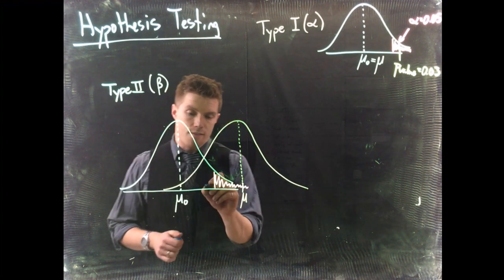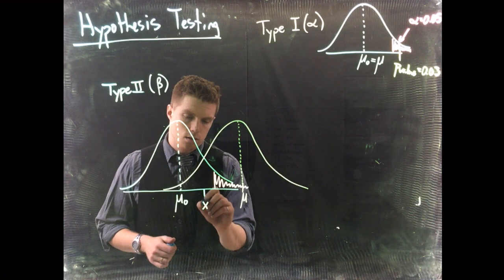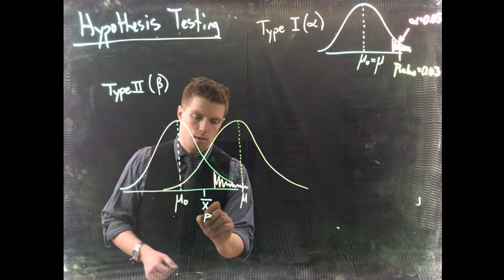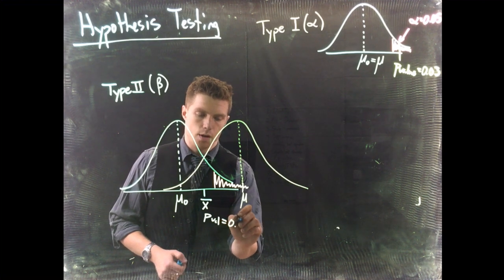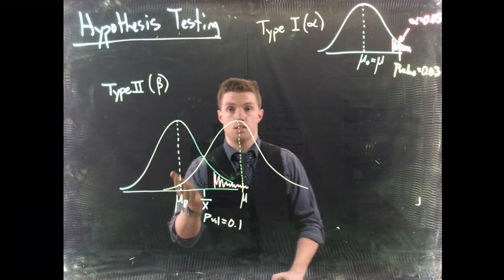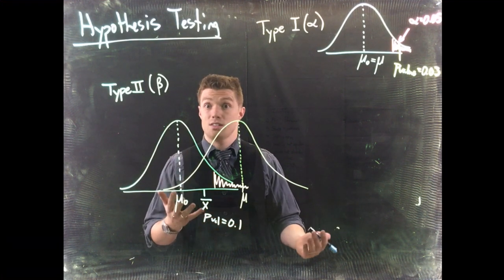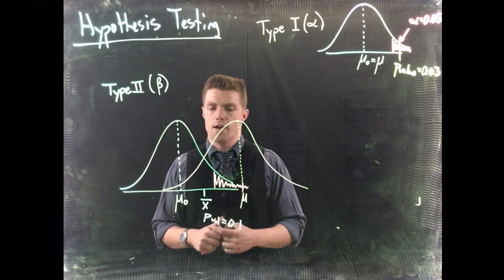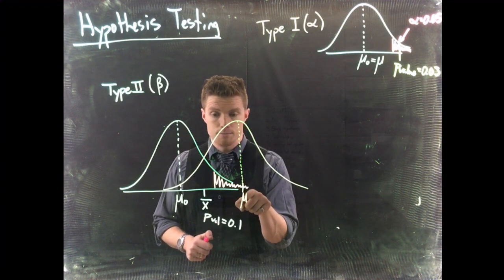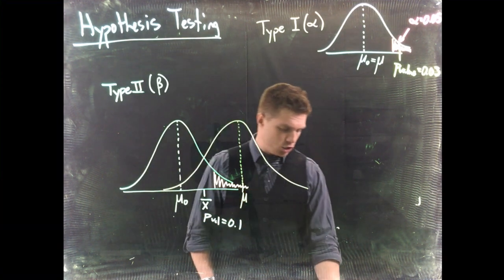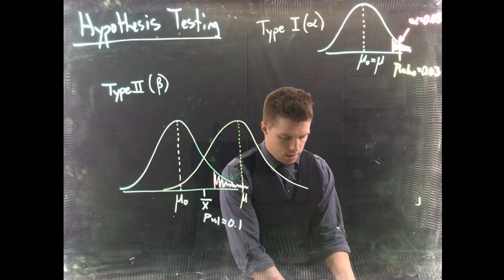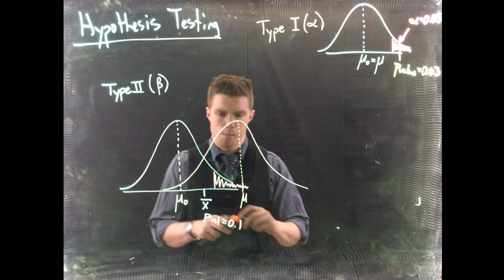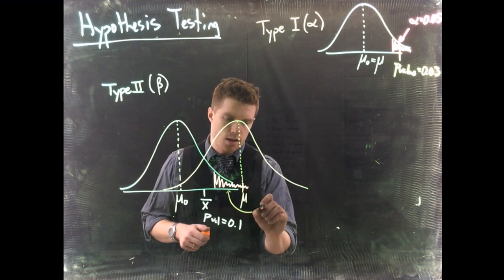Let's say the sample value x-bar we get is not within our rejection region. The p-value would be something like 0.1 — meaning if the null hypothesis were true we'd see this result about 10% of the time. That's not enough evidence to reject with alpha set at 0.05. But the true mean is actually over there, so beta is that shaded region.